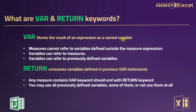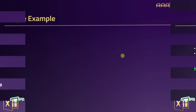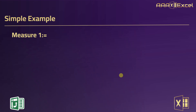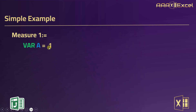Let's look at a very simple example to make sure we understand the concept correctly. Suppose I'm going to write a new measure — let me call it measure1, then semicolon and equal. If I'm planning to use VAR and RETURN keywords, I'm going to start by writing VAR. After the VAR keyword, I'm going to give a name to my variable. Let me call it 'a', then equal, and assign the value 1 to this variable.